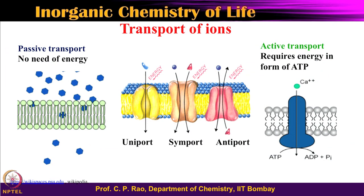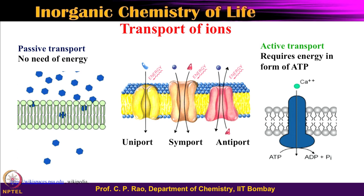Those transports that do not require energy move ions by concentration gradient — from higher potential to lower potential — just as current flows from higher to lower electrical potential, and heat flows from higher to lower temperature. Ions at higher concentration have higher potential and are driven toward lower concentration without any energy input. When energy is required in biological systems, it is ATP — ATP hydrolysis consumes energy, and ATP synthesis stores it.